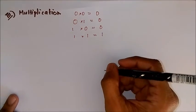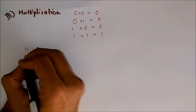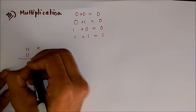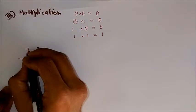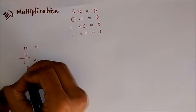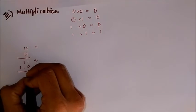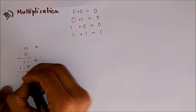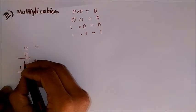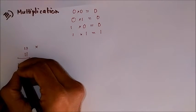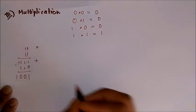Now let's consider a problem. Let it be 111 into 111 itself. Like ordinary multiplication, we multiply this first: 1 into 1, plus 1 into 1, plus 1 with a 0 shift. Then we write the multiplication result 11. Now we add using binary addition: 1 plus 0 is 1; 1 plus 1 is 0 with a carry 1; and 1 plus 1 is again 0 with a carry 1, which is written over here.